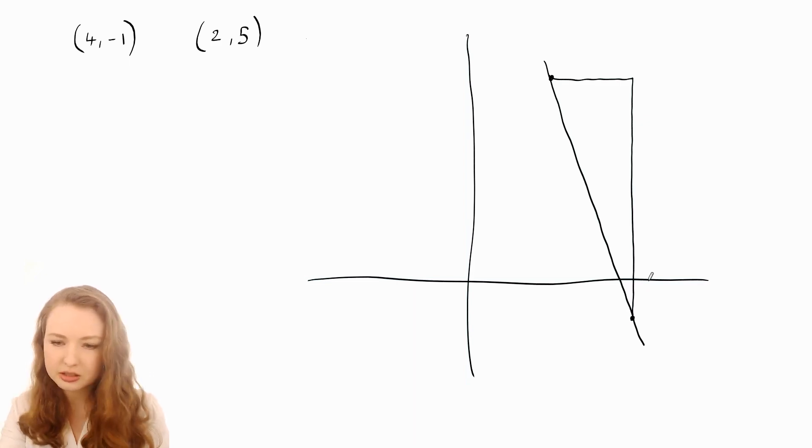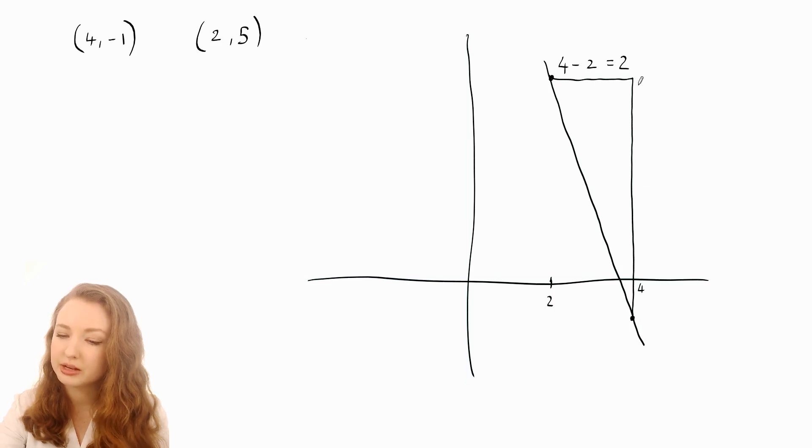Let's start with the run. If the x-coordinate here is four and this one's at two, then the distance from there to there is going to be two, because four minus two equals two.